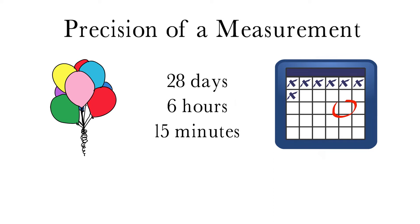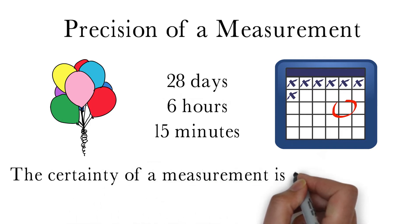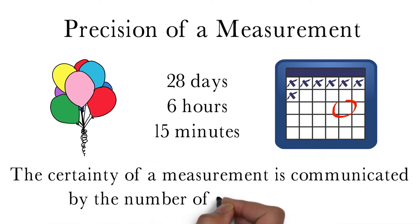The second response is much more certain because it includes more information. The certainty of a measurement is communicated by the number of significant digits in it. We will discuss these rules next.